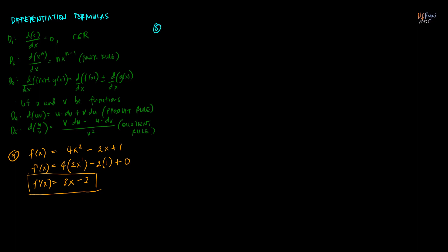Let's do that again in number 8. The function g of x equals 10 times x to the 7th minus 5x to the 5th minus 2x cubed plus x plus 3. So what is the derivative of g of x? The derivative of g of x, denoted by g prime of x, is found by taking the derivative of each of the five terms with respect to x.